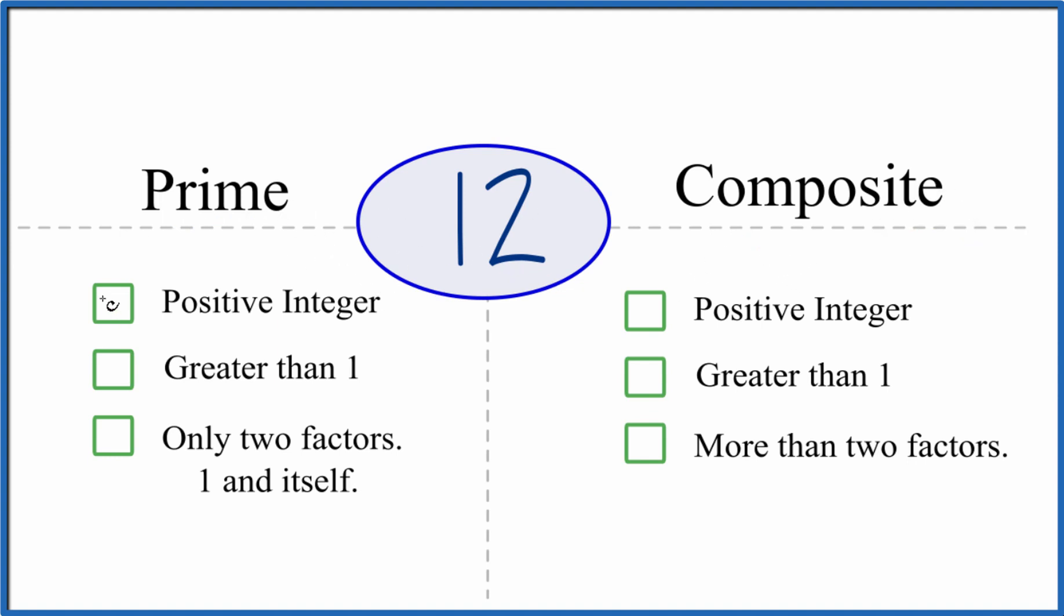So is it a positive integer? Yeah, it's positive. It's a whole number. Is it greater than 1? 12 is greater than 1. And are there only two factors that go evenly into 12, 1 and 12?